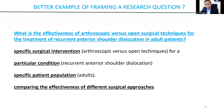A slightly better example: 'What is the effectiveness of arthroscopic versus open surgical techniques in the treatment of recurrent anterior shoulder dislocation in adult patients?' Here you have a specific surgical intervention, a particular condition, and a specified population, comparing effectiveness for different surgical approaches. But even in this example, 'arthroscopic and open techniques' is very broad. The effectiveness hasn't really been defined — are we interested in recurrent dislocations, range of motion, or return to sport? So there's a lot more specificity needed to generate a good research question.